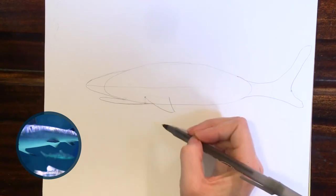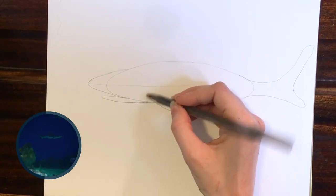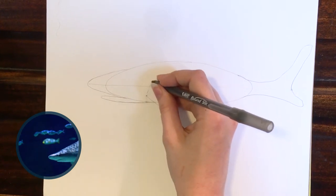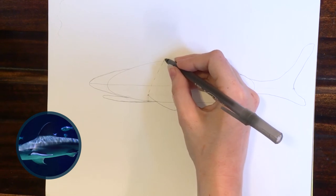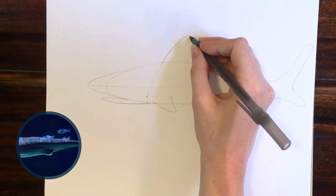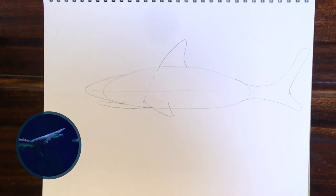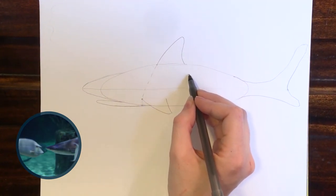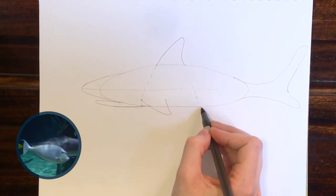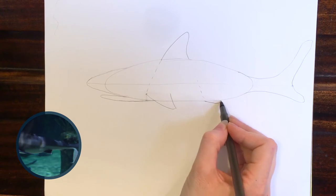And then to get to that big dorsal fin on the top, we're going to go from the front of the pectoral fin and you can kind of make like a dotted line that curves back like this. And then once you reach the top, you come up and there's your dorsal fin. And then from the dorsal fin, we're going to make our pelvic fin. Come back down this way and then the pelvic fin is small and just kind of comes out like this.